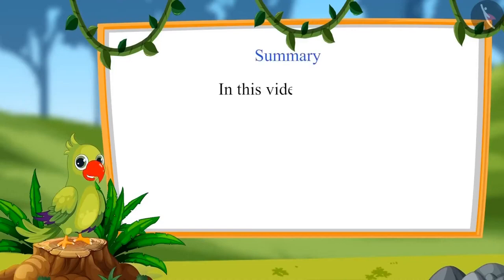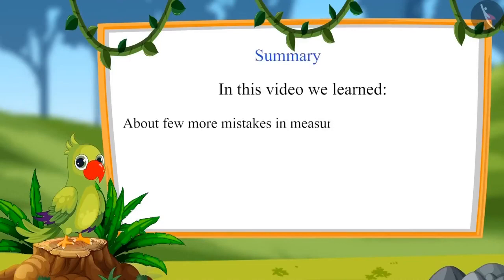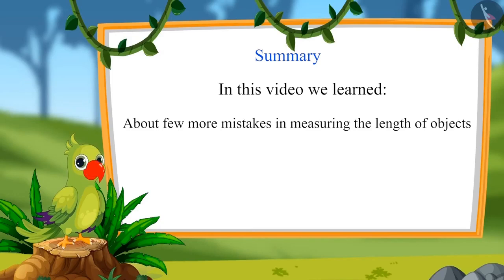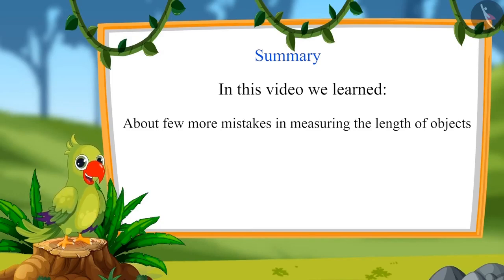So children, that was all for today. In this video, we learned about a few more mistakes in measuring the length of objects — all took a ribbon of five hand spans, but since everyone had different sized hands, the ribbons were different lengths. We should measure with objects that are the same length everywhere. Bye children.